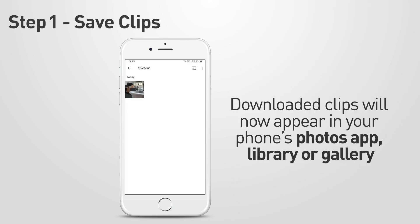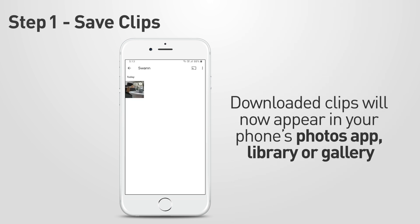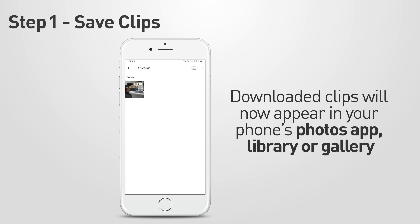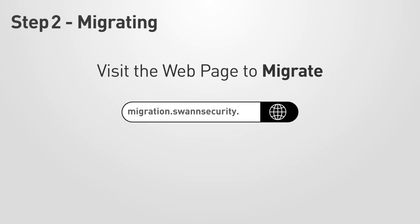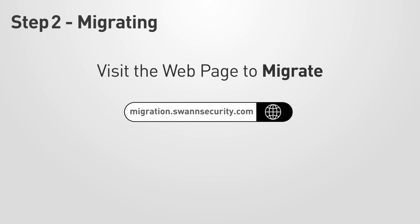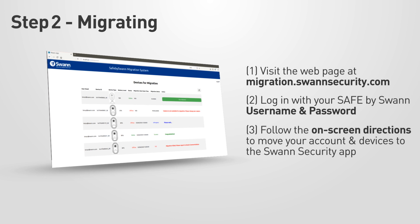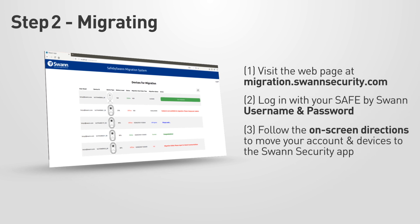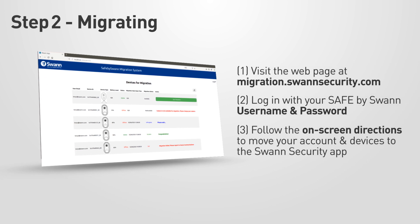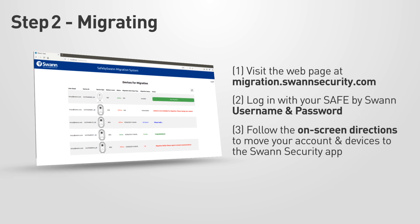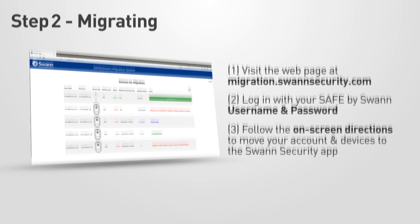Downloaded clips will now appear in your phone's photo app, library or gallery. Step 2 is to visit the web page to begin the app migration. Visit migration.swansecurity.com, then log in with your Safe by Swan credentials, or username and password, and follow the directions on-screen to move your account and devices across to the new Swan Security app.